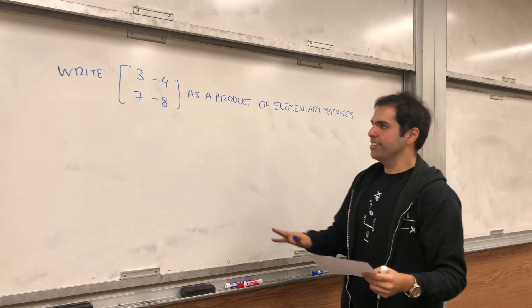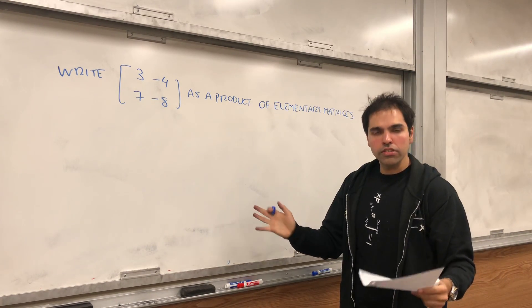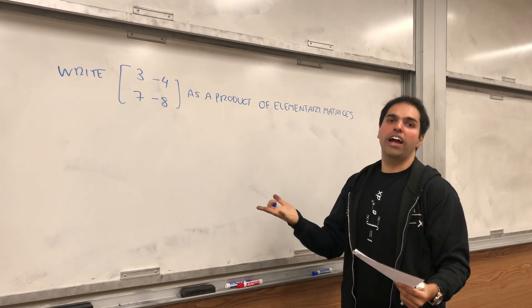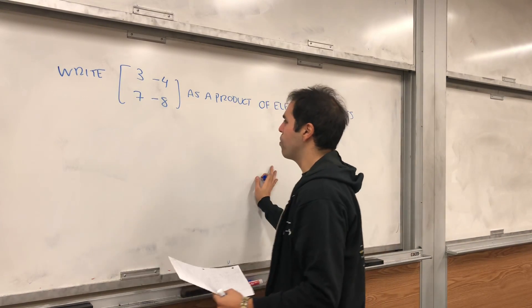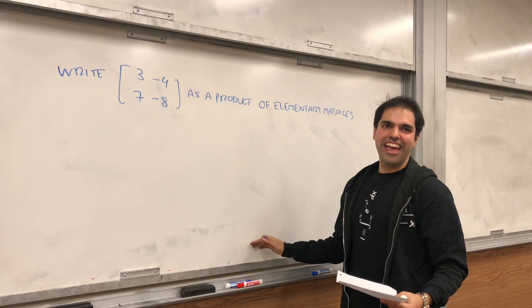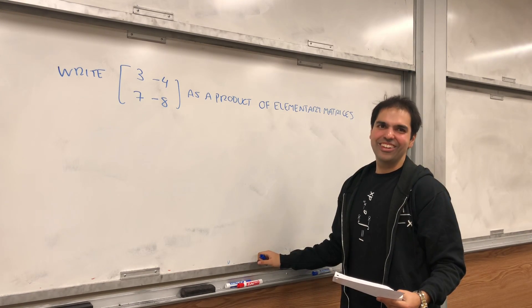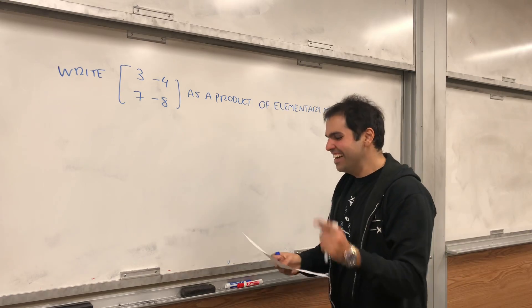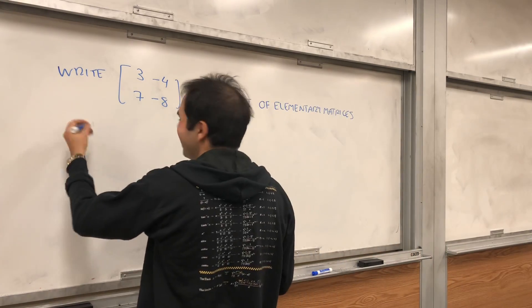all this means is, as usual, you row reduce, but you just have to keep track of all the steps. And this is also important, I think, in numerical analysis when you do, I'm not even kidding, the Lu factorization, the Lu factorization. Okay, so... Lower and upper, right?